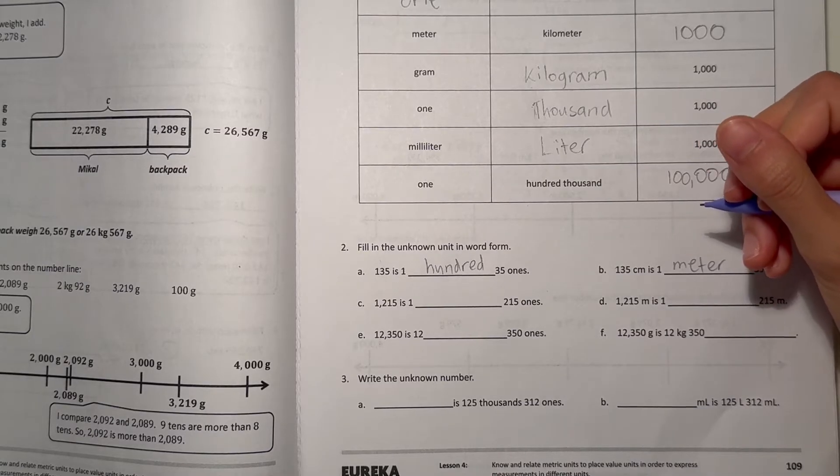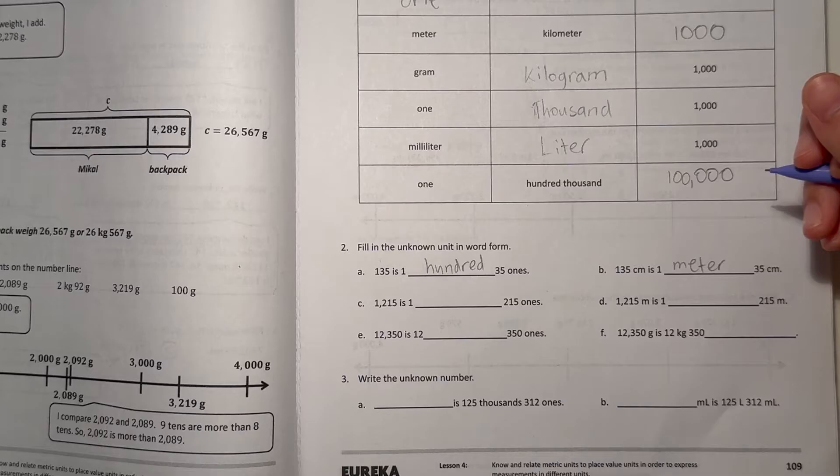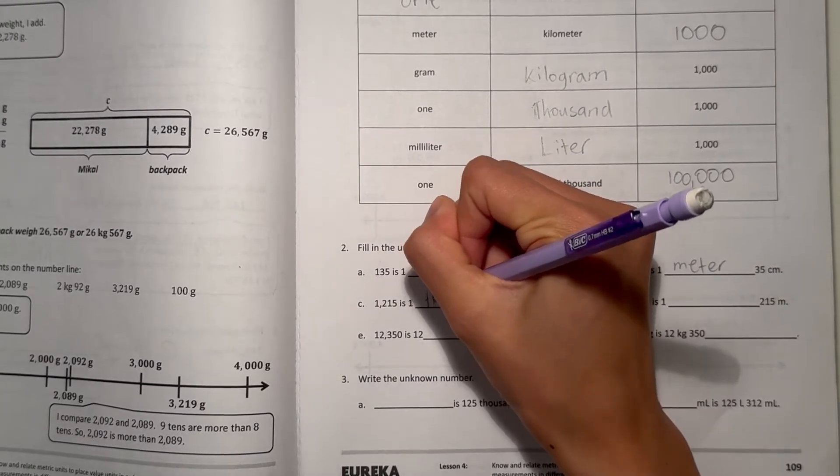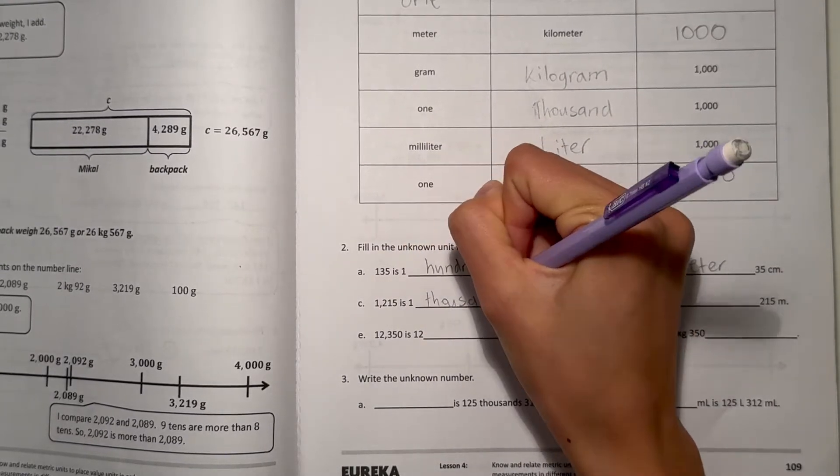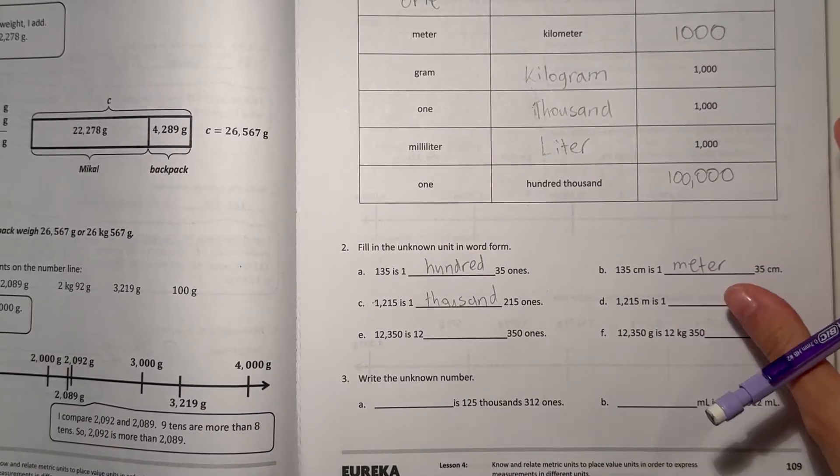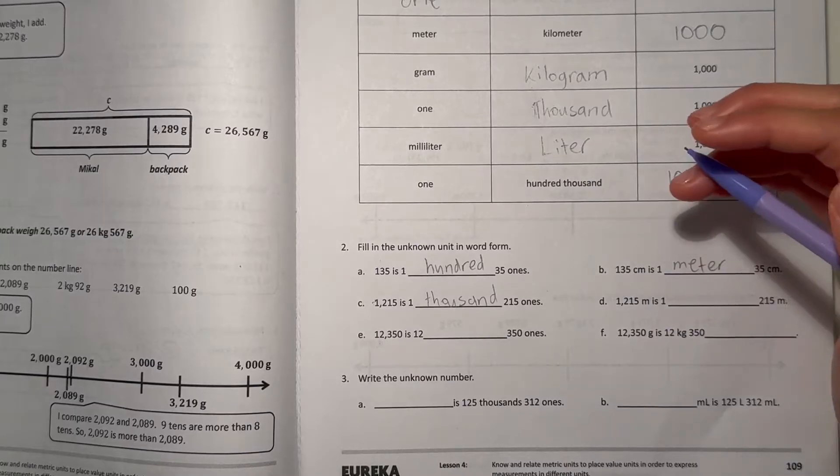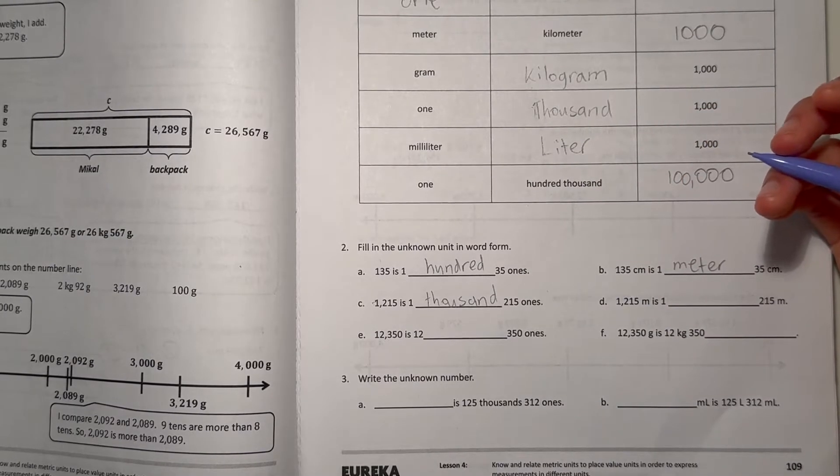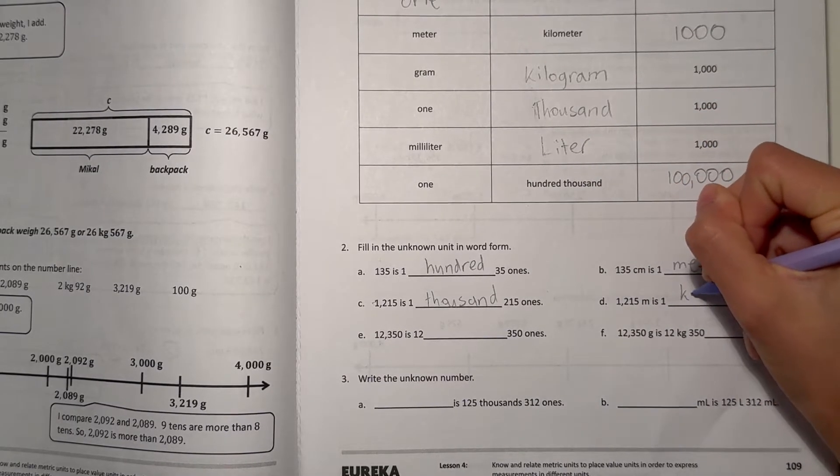And C, 1,215 is 1,215 ones because there's 1,000 over here. And D, 1,215 meters is 1 kilometer.